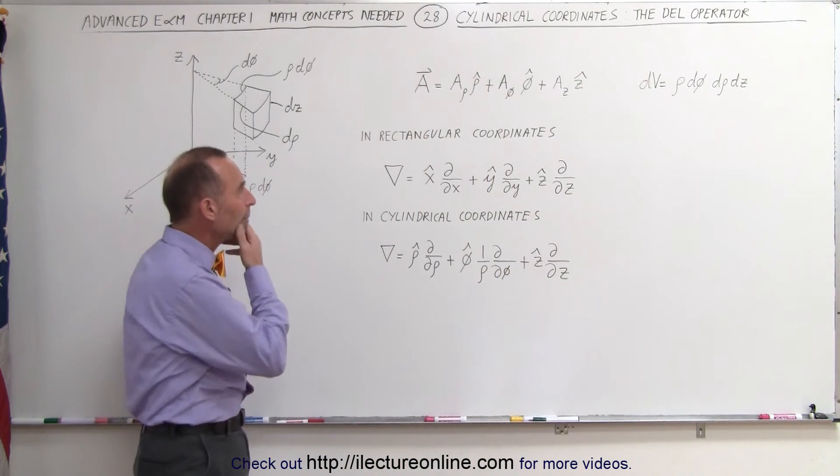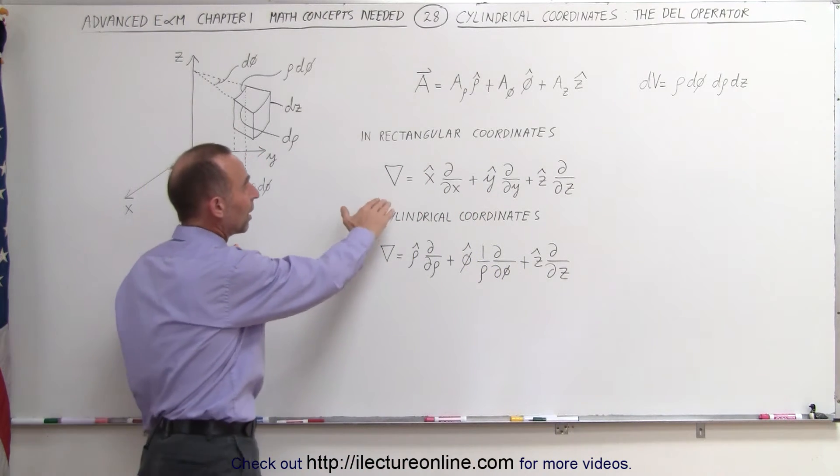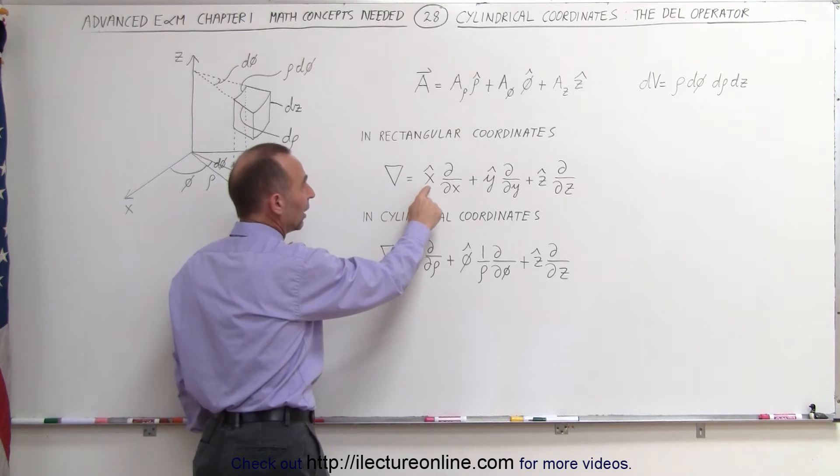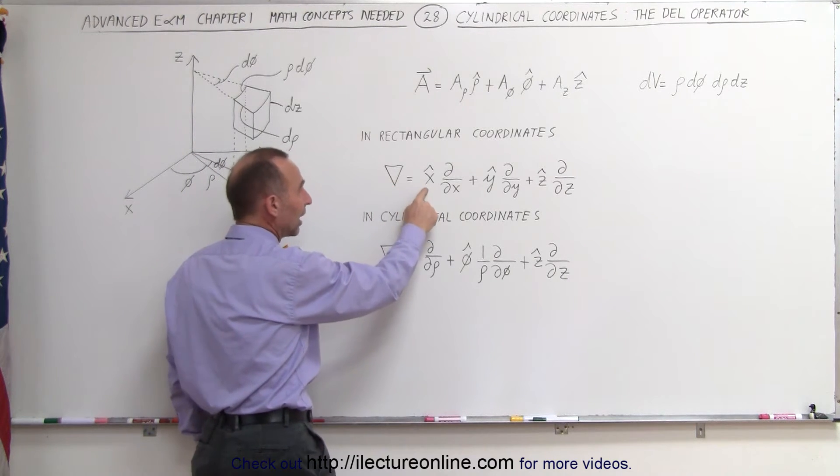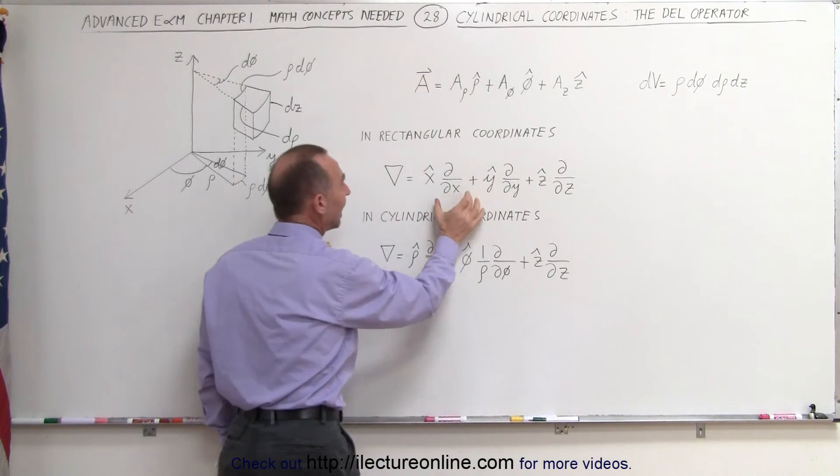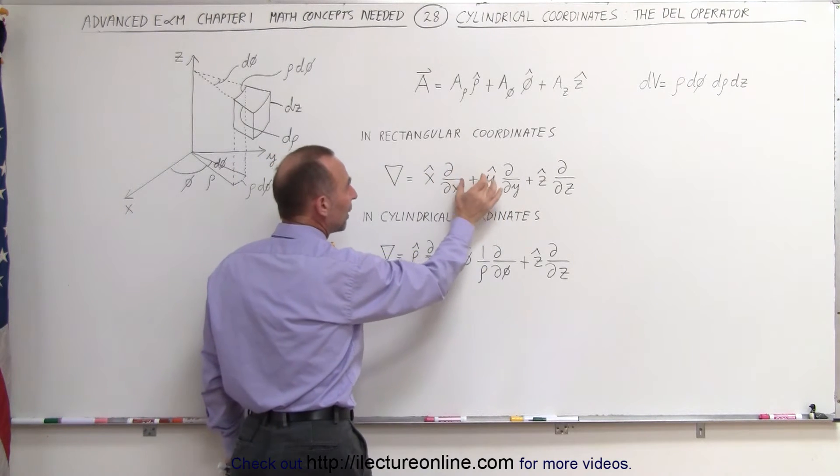And now to the del operator. Remember that in rectangular coordinates the del operator was simply equal to this. It's a vector. It has an x, a y, and a z component. And then the magnitude of the x, y, and z components of the del operator is simply the change of the function.